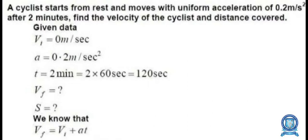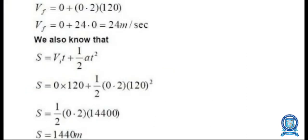From the equation of motion, vf = vᵢ + at. Substituting: vf = 0 + 0.2 × 120 = 24 m/s. The final velocity of the cyclist after 2 minutes is 24 m/s. For displacement, using s = vᵢt + ½at²: s = 0 × 120 + ½ × 0.2 × 120² = 0 + 1440. The total displacement of the cyclist after 2 minutes is 1440 meters.